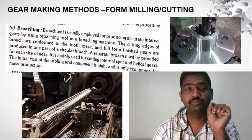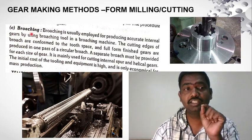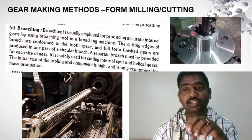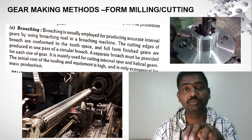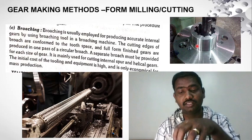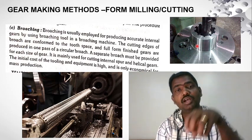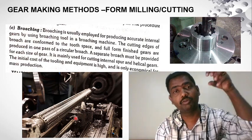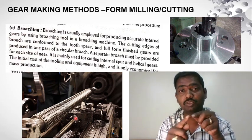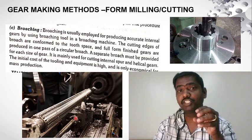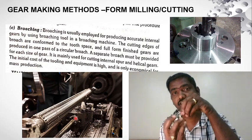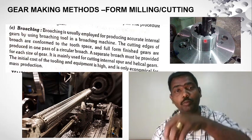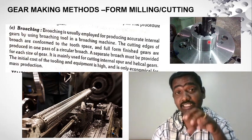Next is broaching. Gear cutting by broaching is used for internal gears. A broaching machine with a broaching tool is used. The broaching tool has a taper shape, and as it passes through the work piece, the internal gear profile is cut.